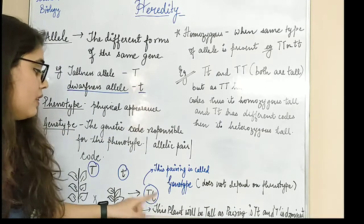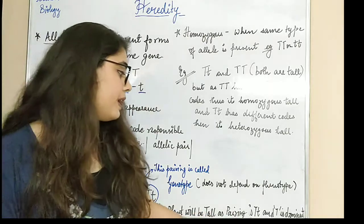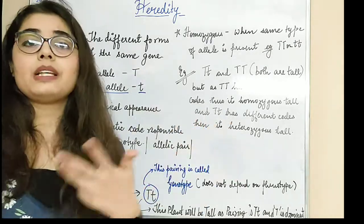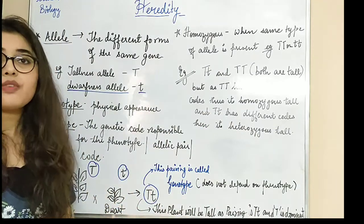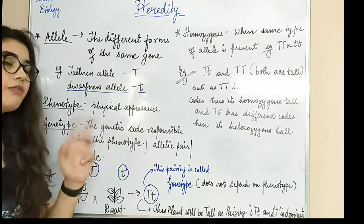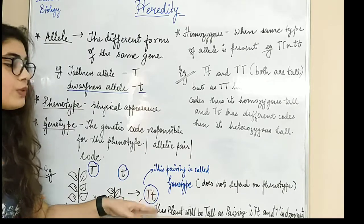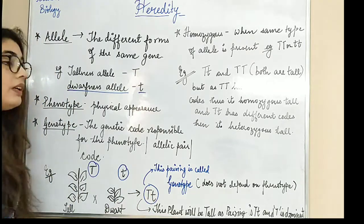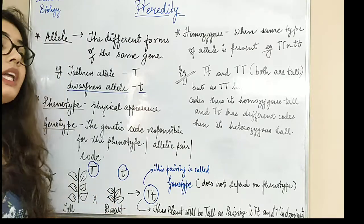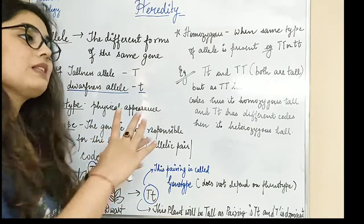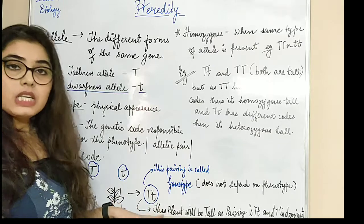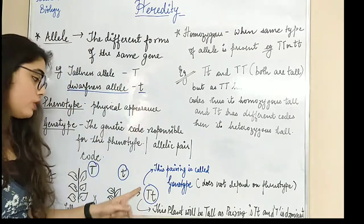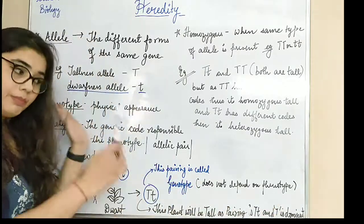This plant will be tall because the pairing is capital T, small t, and T is dominant. If you haven't seen the previous video, I gave many examples there explaining the F1 and F2 generation — filial 1 and filial 2 generation. In capital T small t, capital T is dominant, and dominant means it will mask the effect of the recessive allele (small t) and show its own effect. So the plant will also be tall.